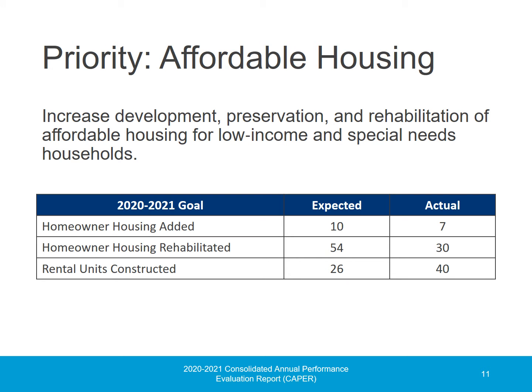Three goals are associated with the City's priority to increase development, preservation, and rehabilitation of affordable housing for low-income and special needs households. The first goal, homeowner housing added, was for 10 units, with the City's actual being seven, with the completion of two projects. The first project was Habitat for Humanity's B and Amador project, consisting of four five-bedroom, two-bathroom, single-family homes. The second was Habitat for Humanity's Central Lots project, consisting of one three-bedroom and two four-bedroom, two-bathroom, single-family homes.